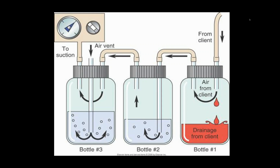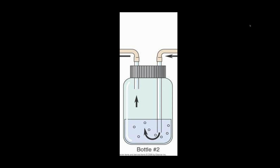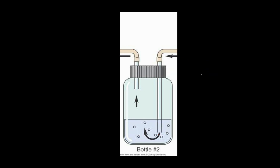Now let's talk about the anatomy of a chest tube system. This is a complex diagram and I do not want you to memorize it. I just think it's helpful to walk through the reasons the different parts exist and understand a little bit about where the anatomy of a pleuravac — or whatever box your chest tube is attached to — is all about. First, we want to be able to remove air or fluid from the pleural space, and obviously we cannot have any backflow. Any air going back into the pleural space would completely negate the functionality of our chest tube. So the first thing we need is a water seal.